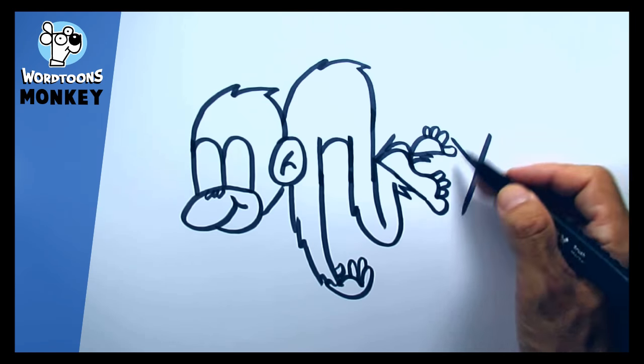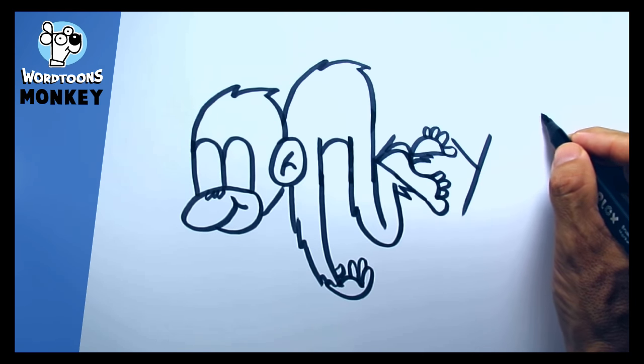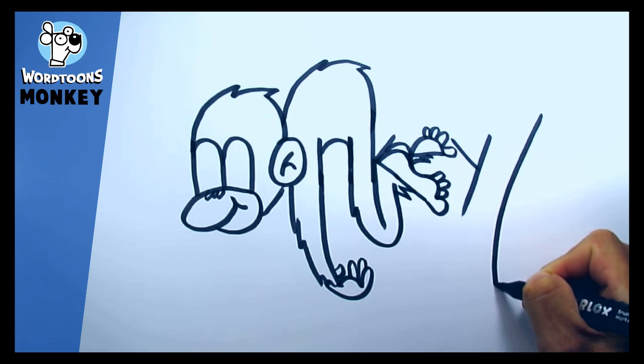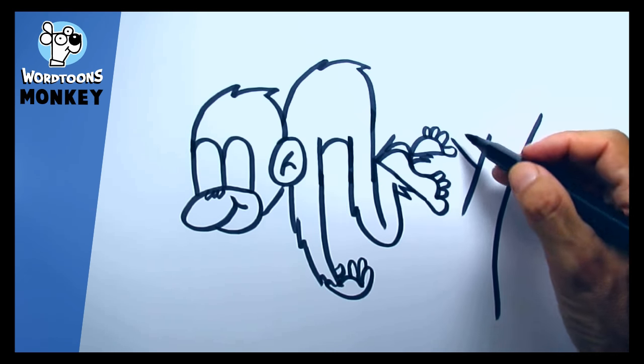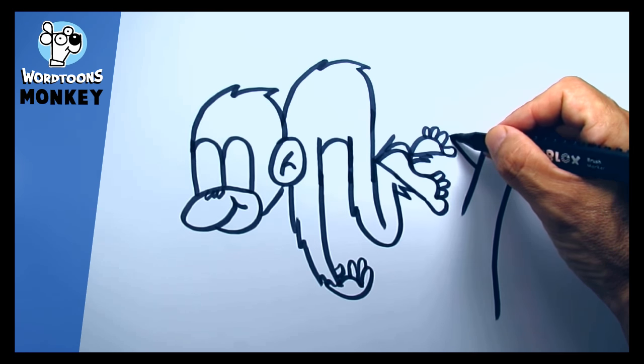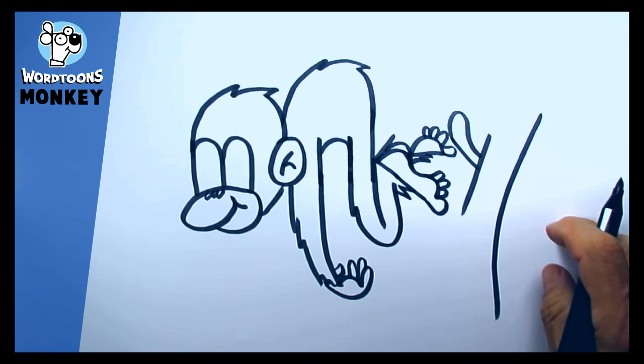Alright, so we're on the home stretch here with the Y, and we're going to turn that into the tree. Down, you want that branch to be a little bit thick but not too much. Then here, this part of the Y, just loop that around, and that's the end of his tail.